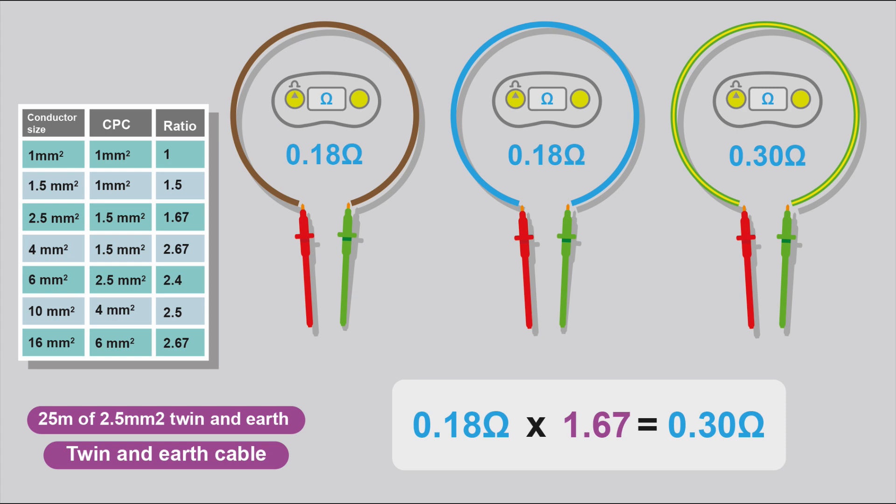If you're getting 0.78, for example, for your CPC, you know you've got a loose connection in that circuit somewhere. You've got to go around looking for that loose connection, tighten it up, need to get it back down to about 0.30.